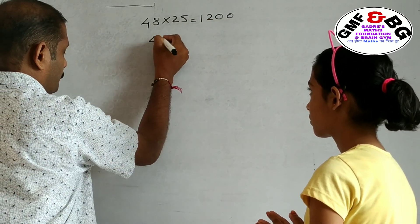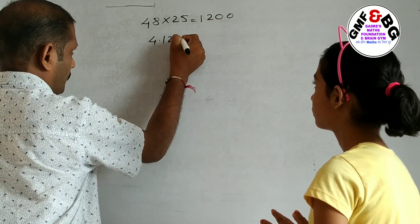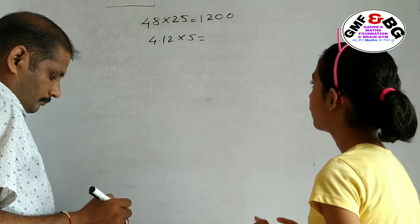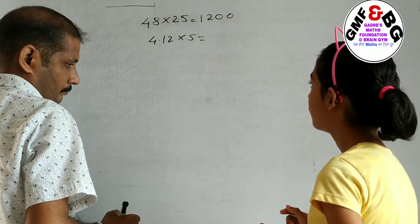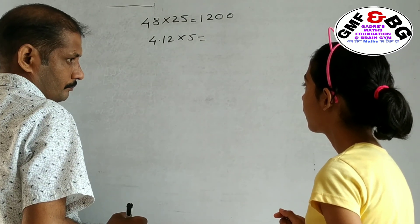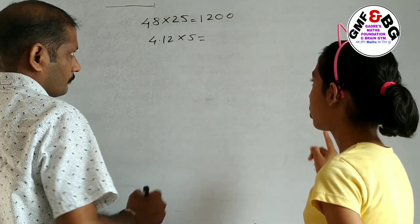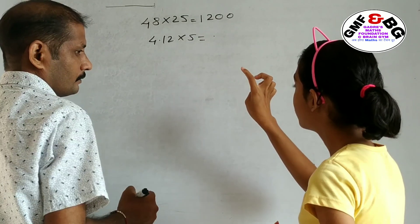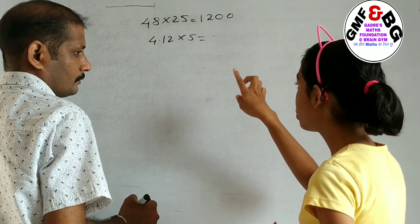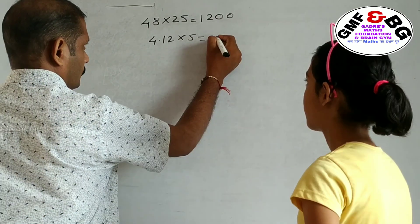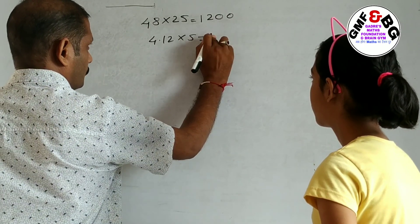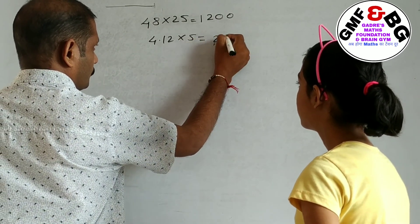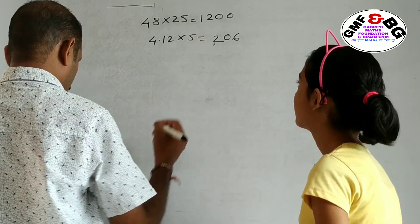Next: 4.12 multiplied by 25 equals 1200. Wait — 200, 1200. Okay, next.